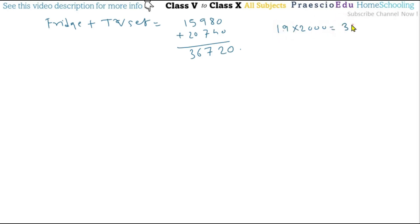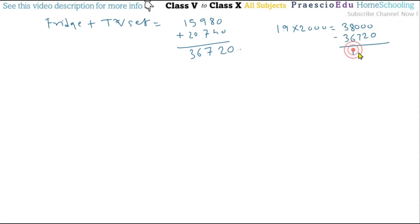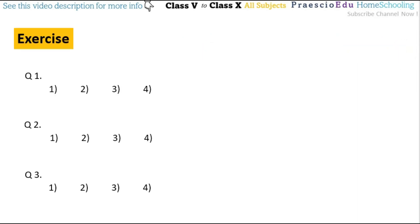She gives 19 notes of rupees 2000, so 2000 multiplied by 19 is 38,000. From this we deduct the purchase value: 38,000 minus 36,720 equals 1,280 rupees the shopkeeper will return. The condition is that only rupees 10 notes will be returned, so 1,280 divided by 10 equals 128 notes. This is given in option number four.